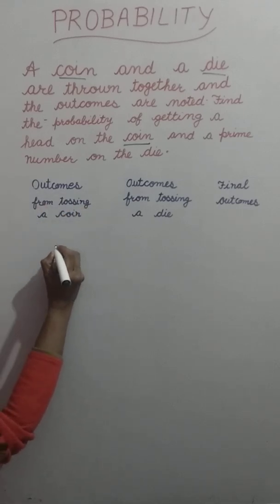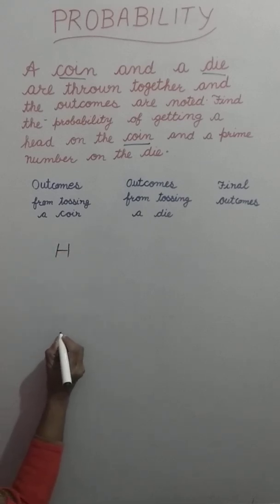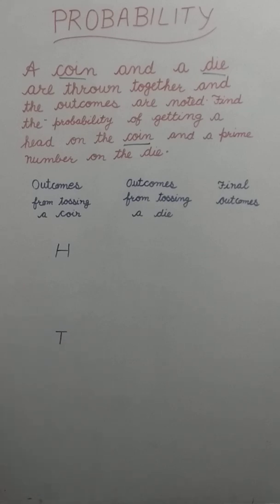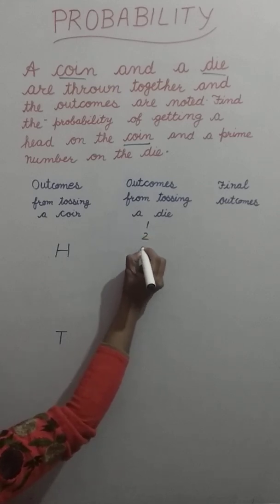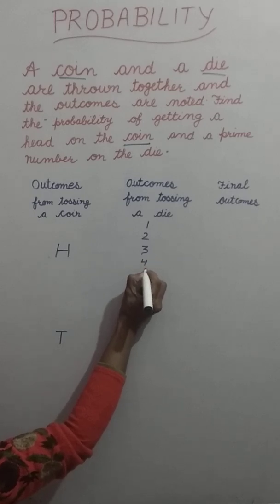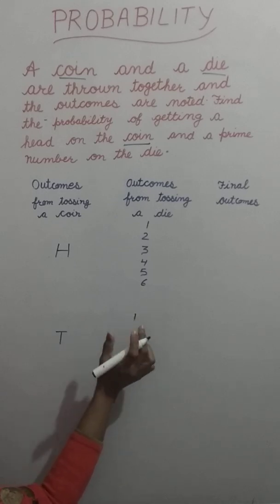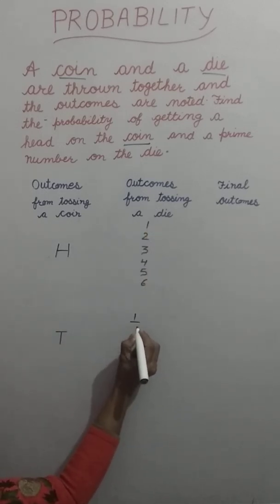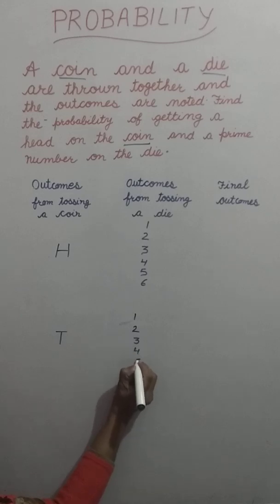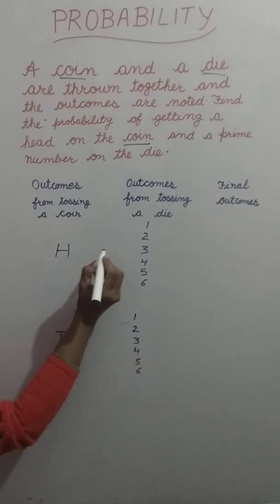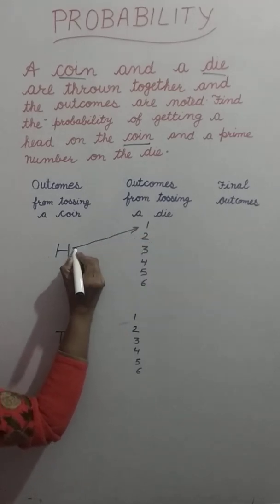When we toss a coin we will get either head or tail, and by tossing a die we can get one, two, three, four, five, or six. We can get these numbers with tail also: one, two, three, four, five, six.